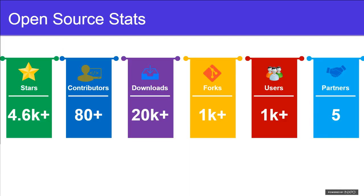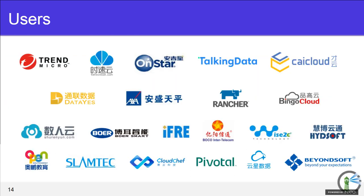From an open source perspective, Harbor has lots of GitHub stars. It's obviously not the best metric to measure popularity, but it gives you a general idea of how many folks are paying attention. We have a number of contributors, lots of downloads, many forks and users. In terms of publicly referenceable users, we have quite a number and are working with more. We'll be talking specifically about Chi Cloud shortly.